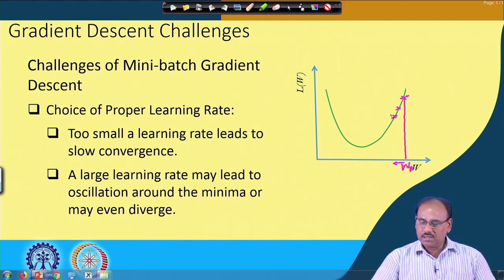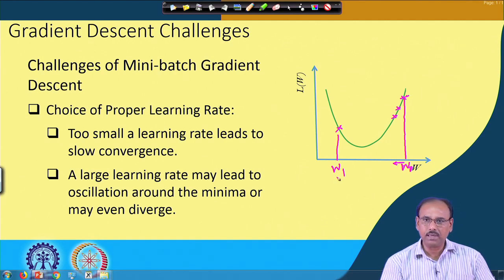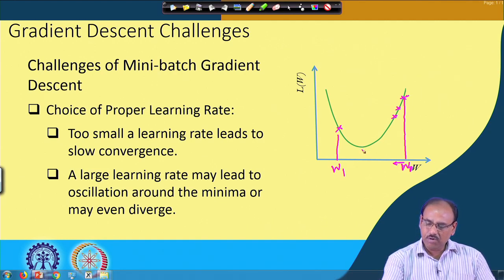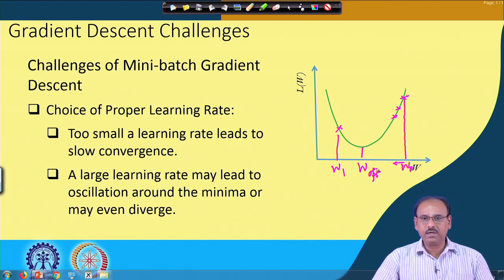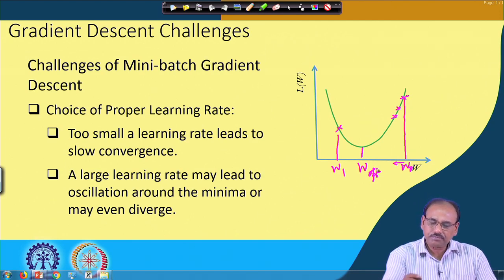If the step size is very large, at the next moment W1 will jump over the minimum location — the optimum weight vector that minimizes the error. So the choice of a proper learning rate or proper step size for weight update is very, very important.